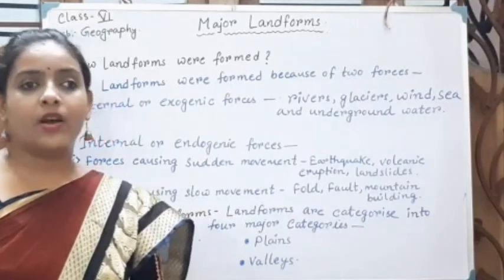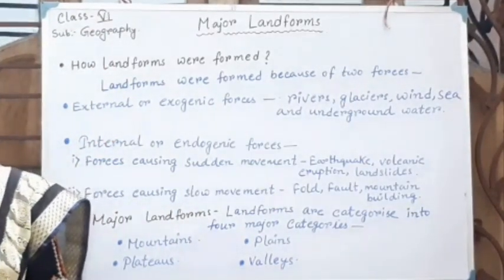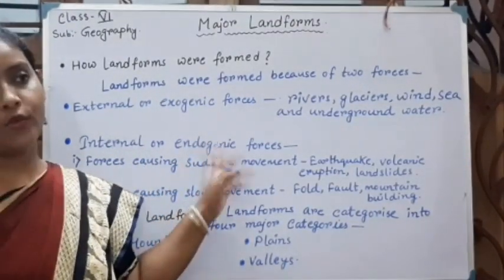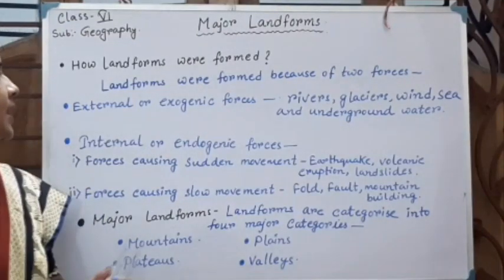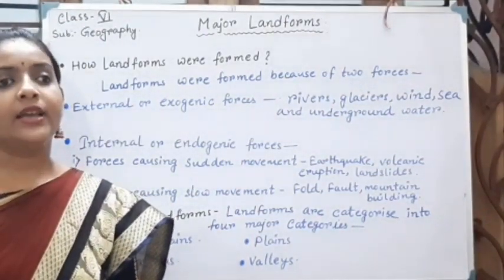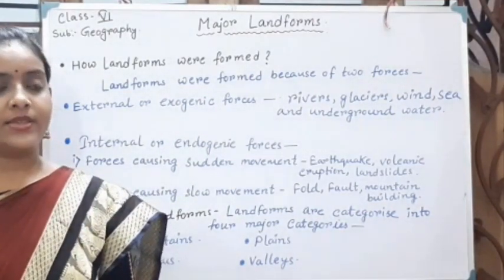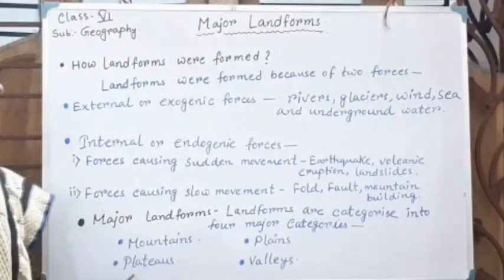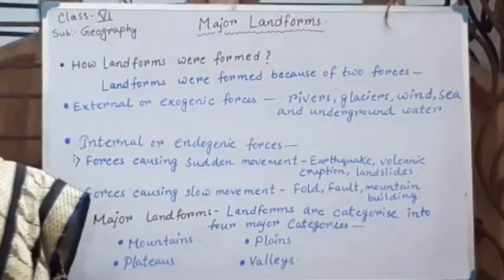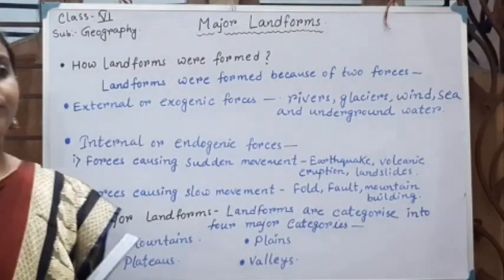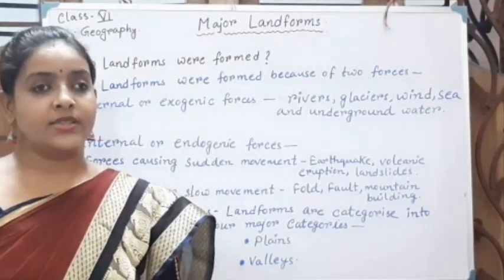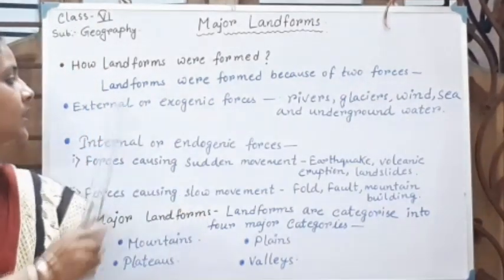These landforms are formed because of two forces. One is external or exogenic forces, and number two is internal or endogenic forces. External or exogenic forces generally work on the surface of the Earth, and their main work is to make the Earth's surface flat and regular. These external forces are rivers, glaciers, wind, sea, and underground water. Internal or endogenic forces work in the interior of the Earth and make the Earth's surface irregular and uneven — just the opposite of external forces.